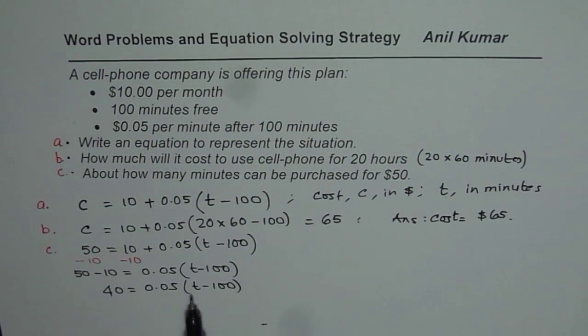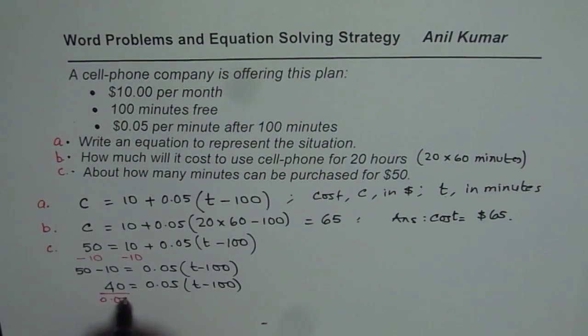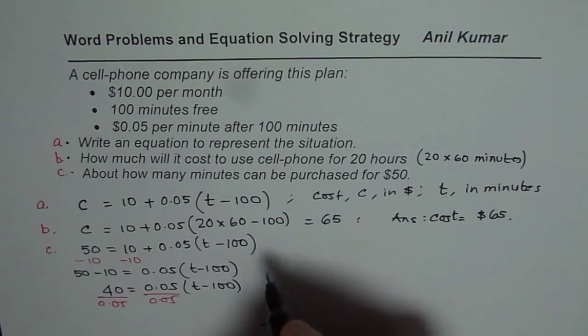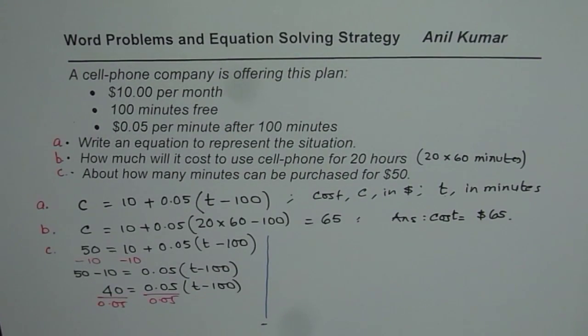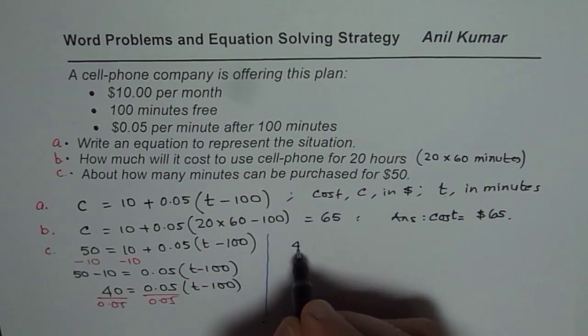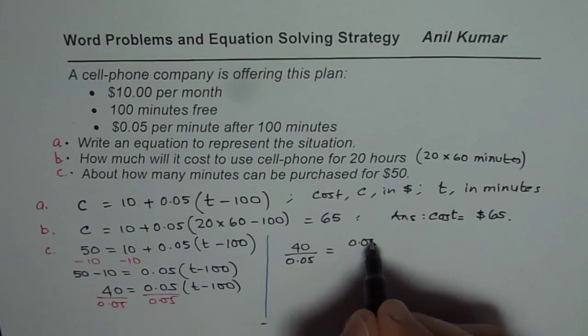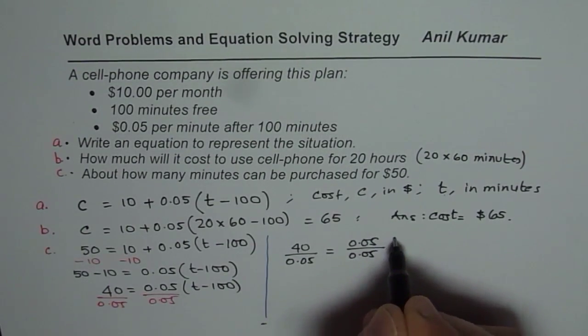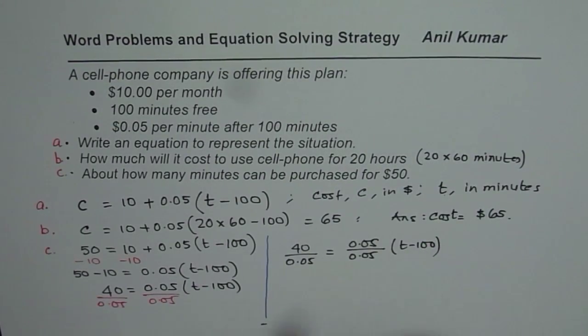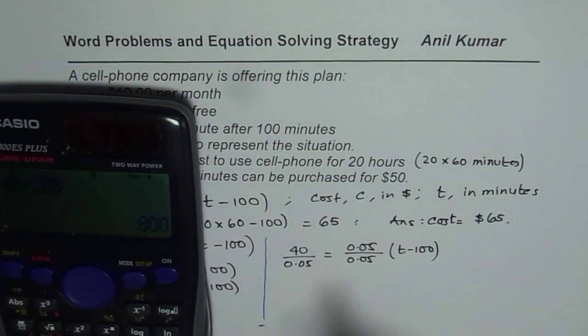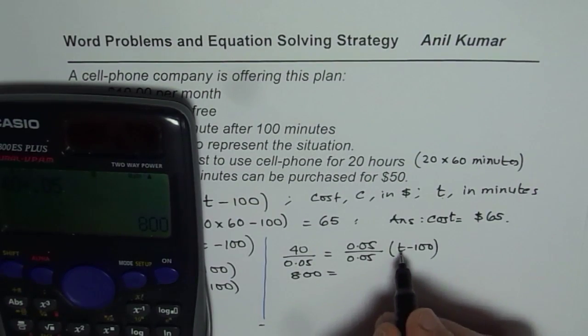So we get 40 equals to that much. Now from here, how to solve for T? We are saying 0.05 times that. So if I divide both sides by 0.05, then we will get what T minus 100 is. So let us take it to the right side and solve further. So what we have here is, we have 40 divided by 0.05 equals to 0.05 divided by 0.05 times T minus 100. So let us divide 40 by 0.05. That gives us 800. So we have 800 equals to T minus 100.